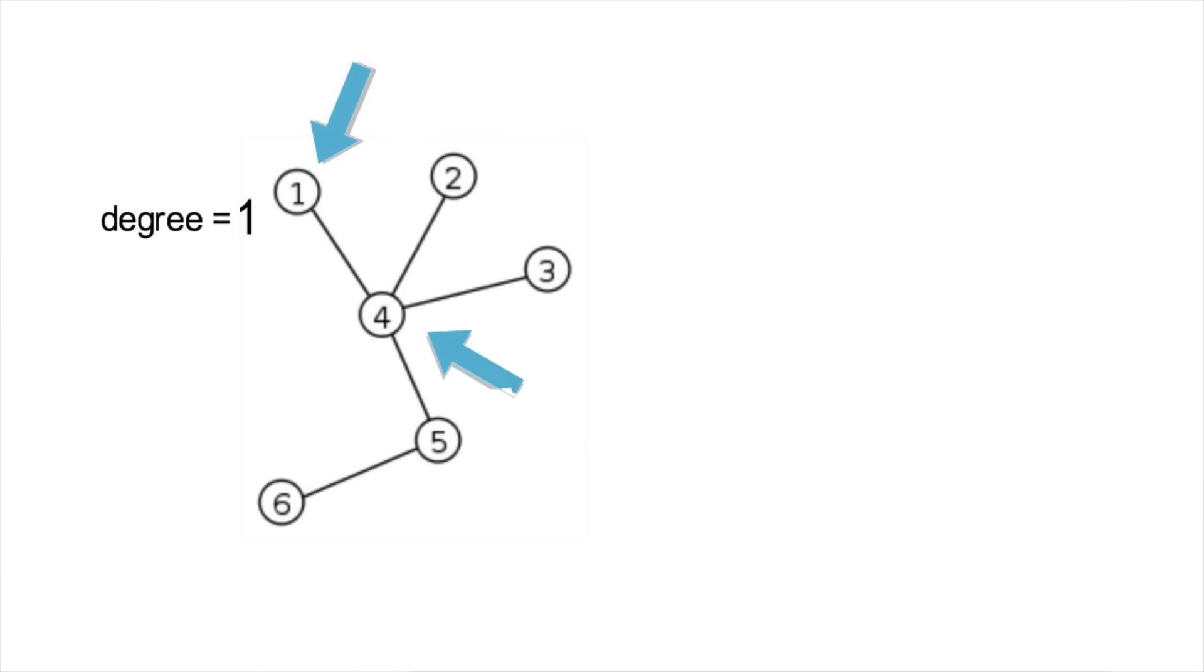Now what about node 4? Well, we see there are 4 edges leaving it, which is its degree. If we do this for every node, these are the amount of edges leaving each one, or the degrees. Add all these degrees up, and we get 10.